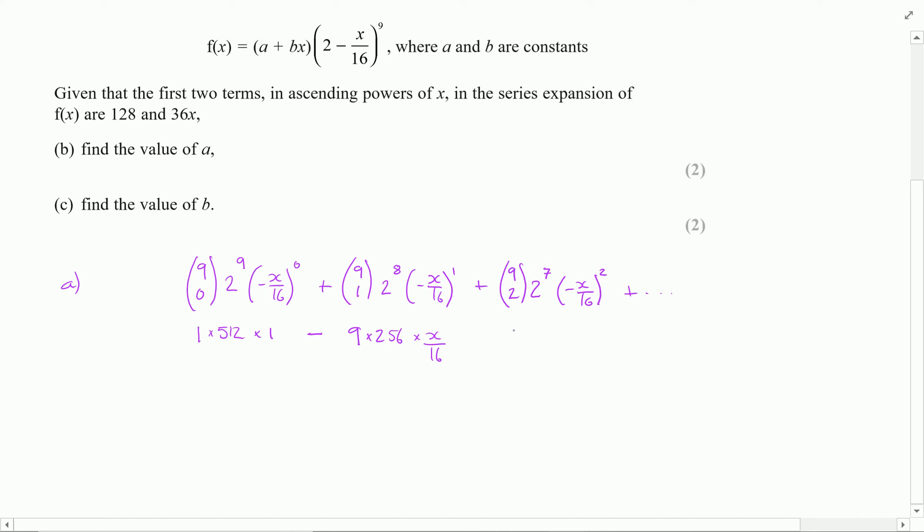9 choose 2 which is 36 times by 2 to the power of 7 which is 128. Now this time the x is squared so that negative is going to disappear so that's going to be a plus. So that's going to be times by x squared all over 256.